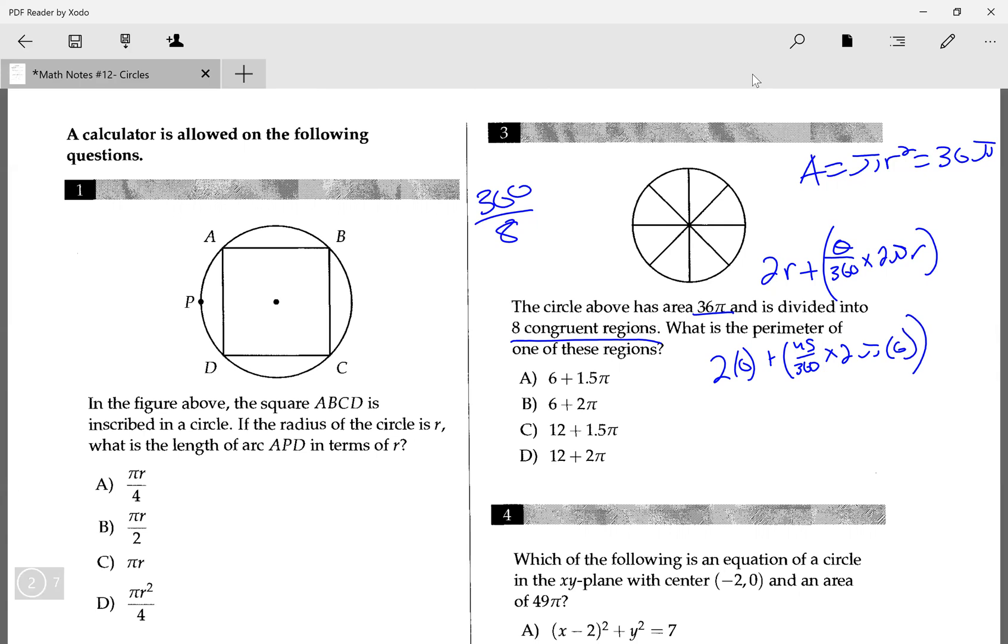So alternatively, instead of doing θ/360, you could have just done 1/8 because you know it's divided into 8 sections. However, I'm just doing it based on the formula so you guys see where all the numbers are from. So in this case, it'd be 12 plus 1/8 times 2πr would be 12π. This is just 12 + 1.5π, which is why C is the right answer there.